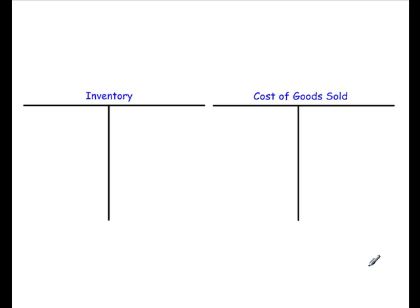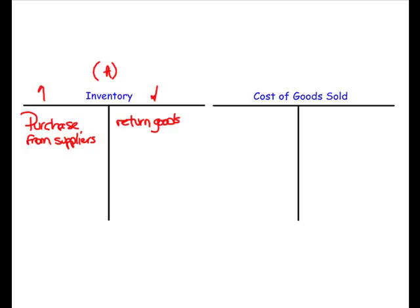This question introduces a few new accounts used in companies selling products. We introduced the inventory account in the last question, and remember that the inventory account is an asset account, and asset accounts go up with debits and down with credits. Inventory goes up when we purchase goods from suppliers, and it goes down or decreases when we return goods to that supplier, or we pay for inventory and receive an early payment discount.